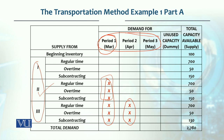यही चीज़ इधर भी है — third period की production और supply cannot meet the demand of first period। Similarly, third period की supply cannot meet the demand of second period। इसलिए इधर cross लगाए हुए हैं और इधर कोई figure नहीं डाली।